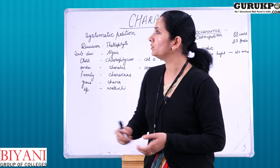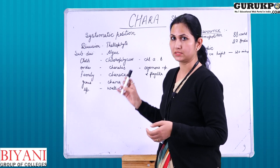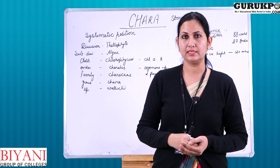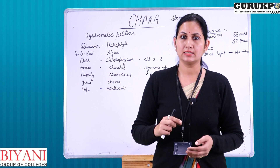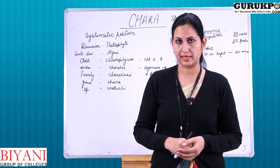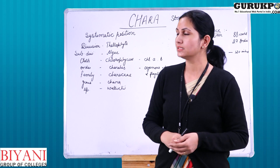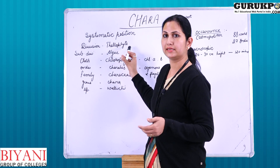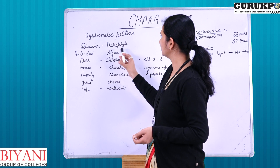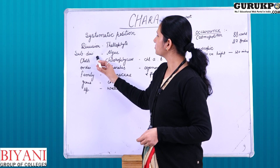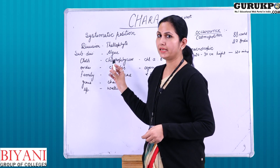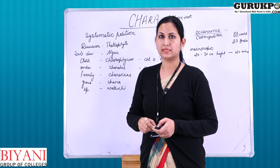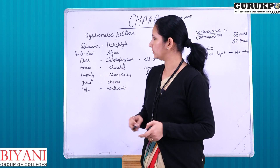Chara is also known as Stonewort. It is a very macroscopic algae and its size can be seen with the naked eye. Regarding its systematic position, it belongs to division Thallophyta, and then it belongs to subdivision Algae, meaning it is photosynthetic and can make its own food.